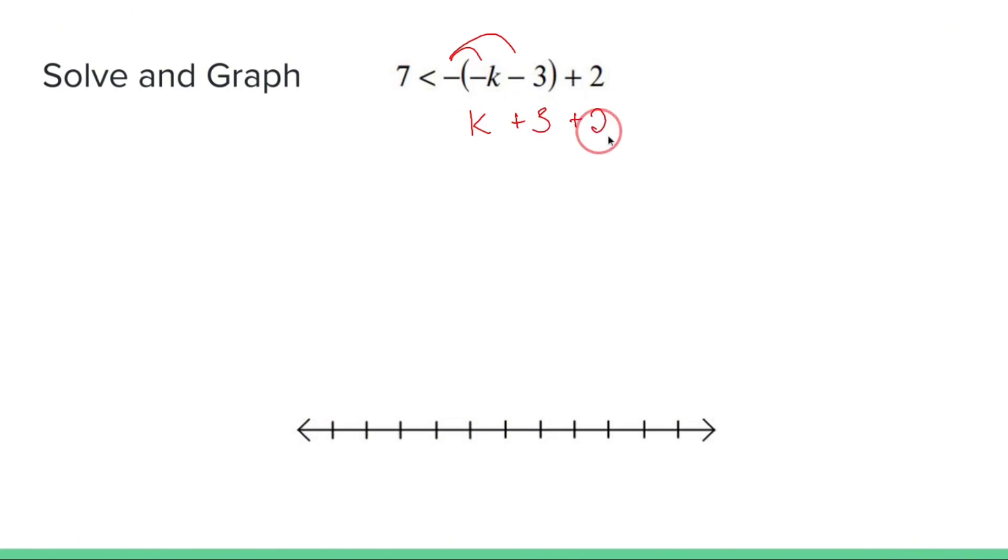Drop down those. Drop down the seven. Drop down the less than. On the right side, I have three plus two, so let's just do that. K plus five.